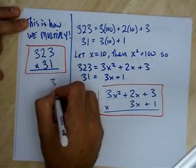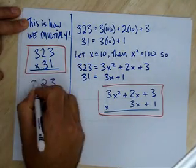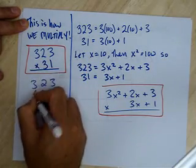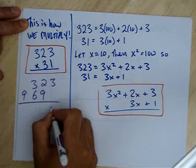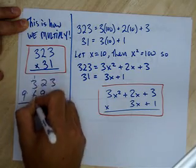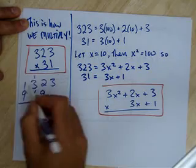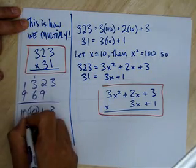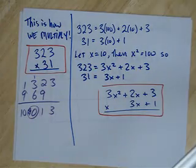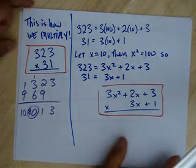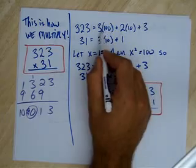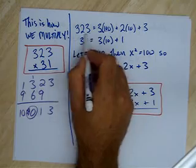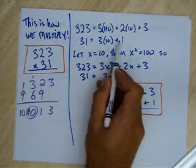For example, 3 times 1 is 3, 2 times 1 is 2, 3 times 1 is 3, 3 times 3 is 9, 3 times 2 is 6, 3 times 3 is 9 — then add them up. If we think of 323 as 3 times 100 plus 2 times 10 plus 3, that's 300 plus 20 plus 3, which is 323. And 31 is 3 tens and a 1.